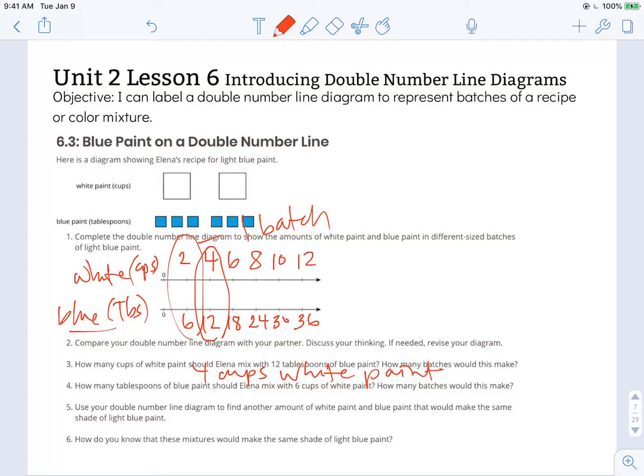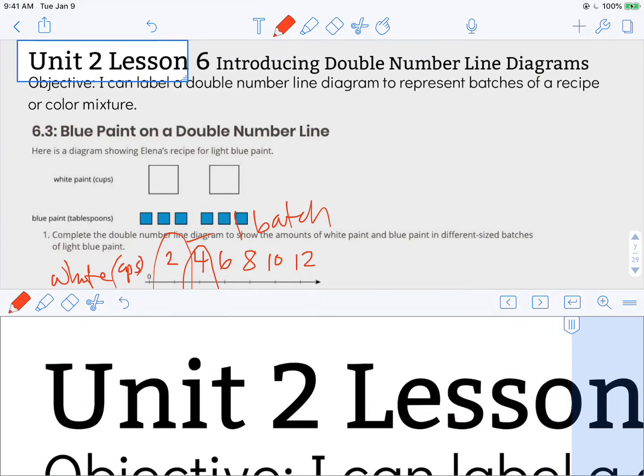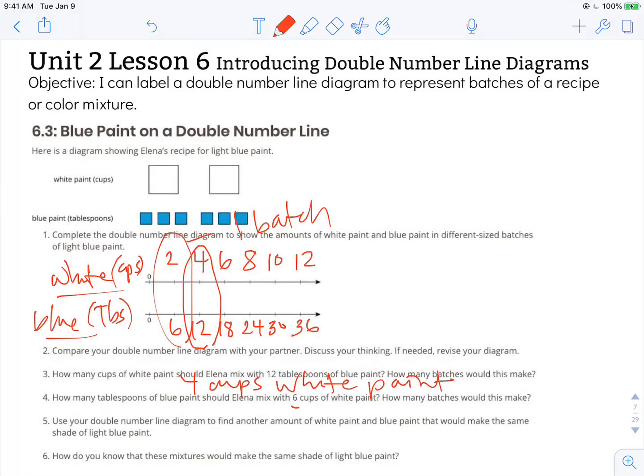Number four says how many tablespoons of blue paint should Elena mix with six cups of white paint? So again I'm going to go to the white paint because that's the value that's been named and find six cups of white paint. You can see that matches with eighteen tablespoons of blue paint.